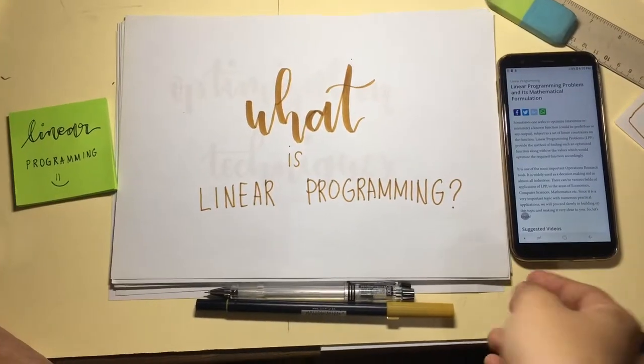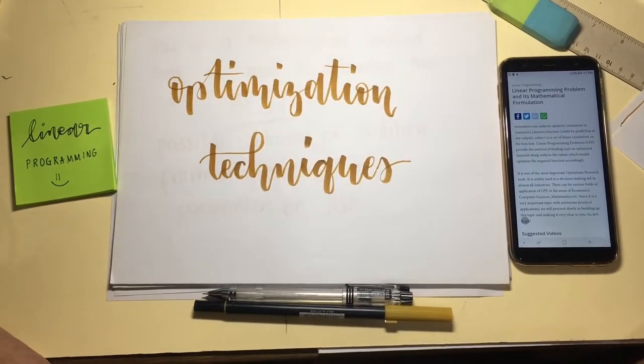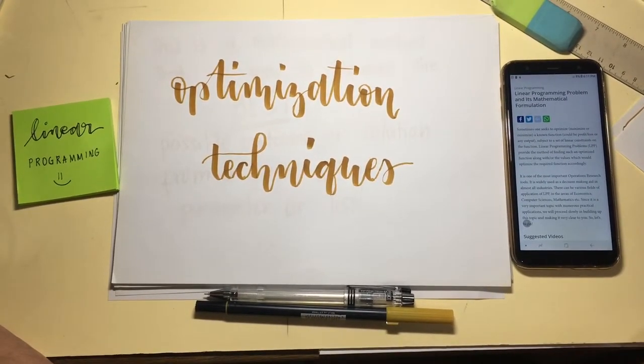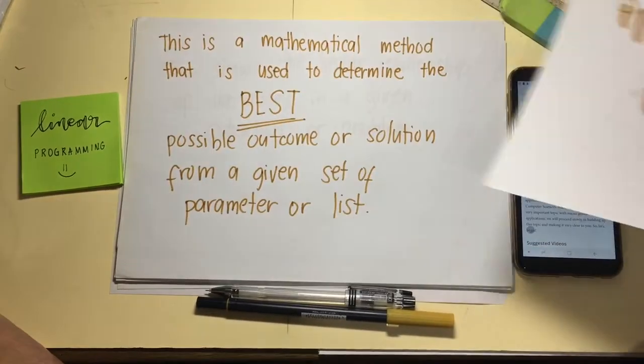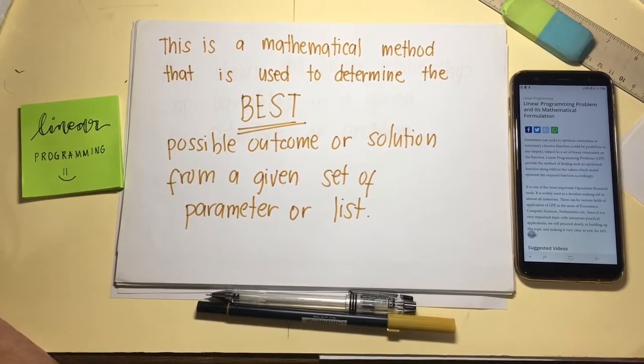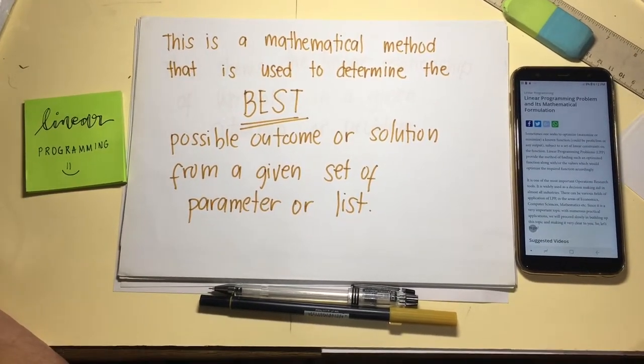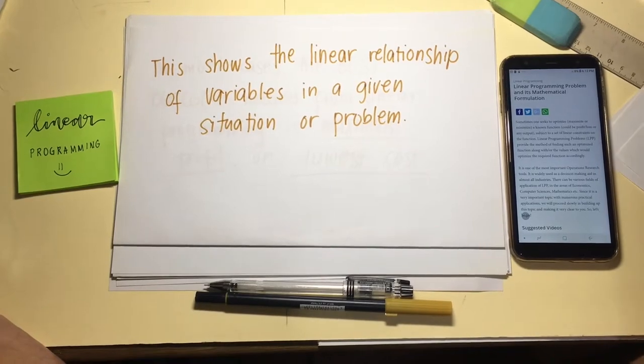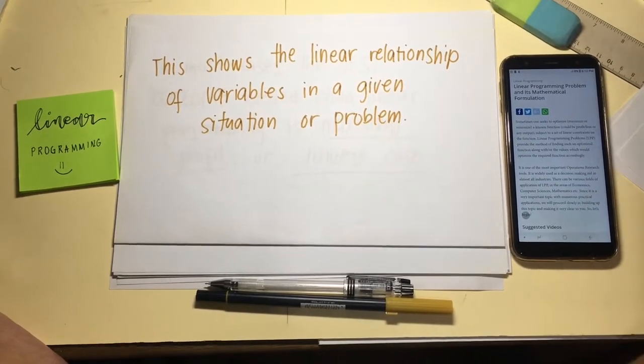But what is Linear Programming? It is an optimization technique where, in simplest terms, it is choosing the inputs that will result in the best possible outputs or making things the best that they can be. Linear Programming is a mathematical method that is used to determine the best possible outcome or solution from a given set of parameters or list. Linear Programming shows the relationship between variables by the use of linear equations and linear inequalities.